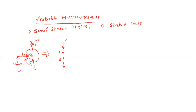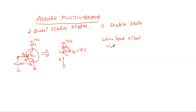The emitter terminal and collector terminal are connected through RC. Whenever the input is less than 0.7V, the collector and emitter terminals will be open, and the output voltage across the collector will be equal to VCC. That means when input equals 0 or low — less than 0.7V — transistor Q1 will be OFF, collector and emitter terminals will be open, and the output voltage equals VCC.